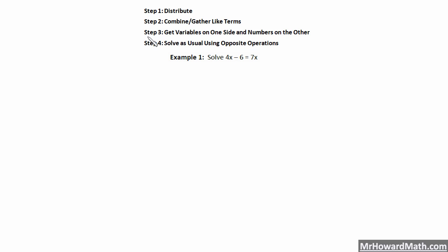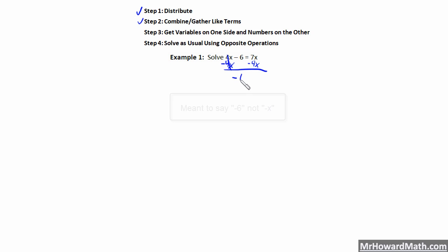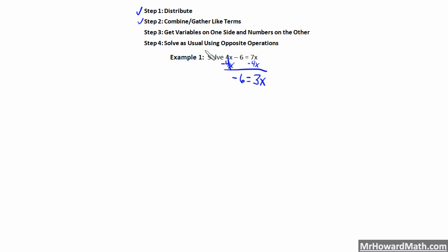Step 1: distribute. Do we need to distribute here? No. Step 2: do we need to combine or gather like terms on either side? No — we can't combine 4x minus 6, and 7x is by itself. So step 3: we need to get variables on one side and numbers on the other. I could subtract 7x or subtract 4x from both sides. To keep my variable term positive, the best thing is to subtract 4x. These cancel out, and negative 6 equals 7 minus 4 is 3x.